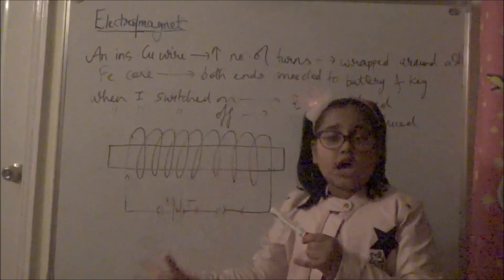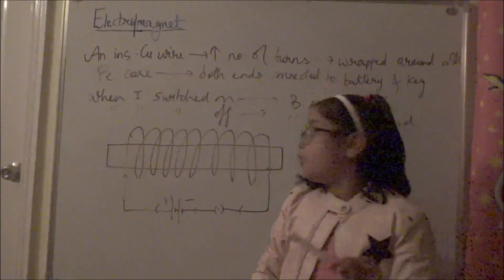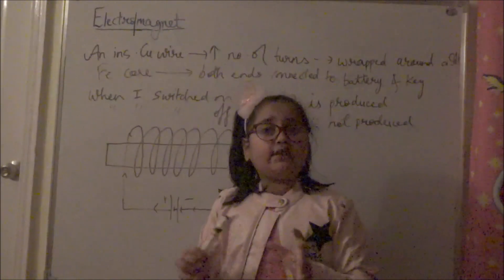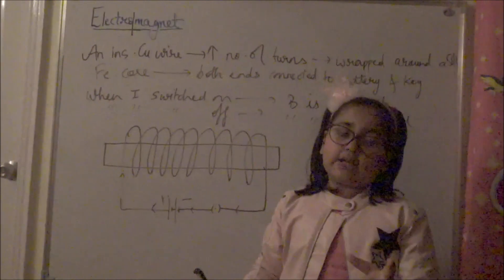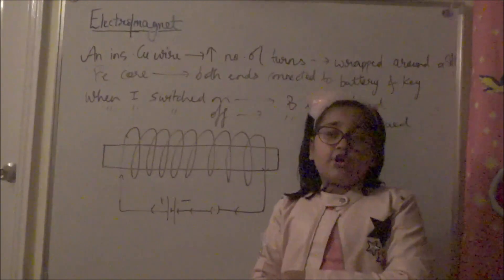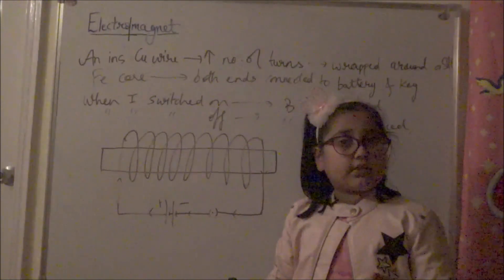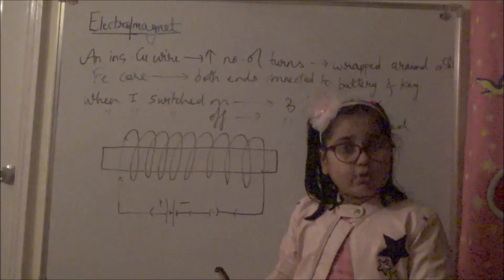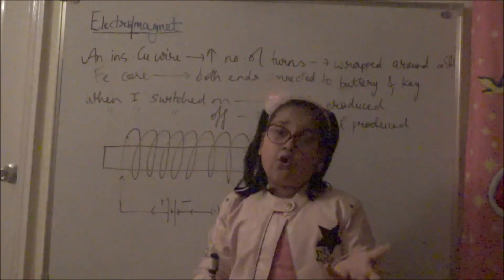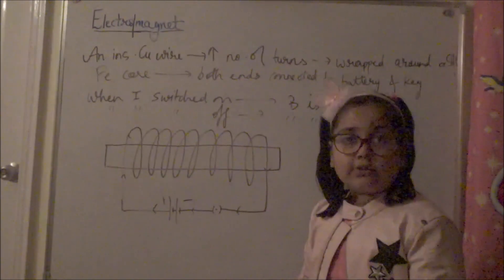An electromagnet behaves like a bar magnet. If we freely suspend an electromagnet, it will align in the north direction — a property of a bar magnet. Like a bar magnet, an electromagnet also produces a magnetic field with a north pole and a south pole.